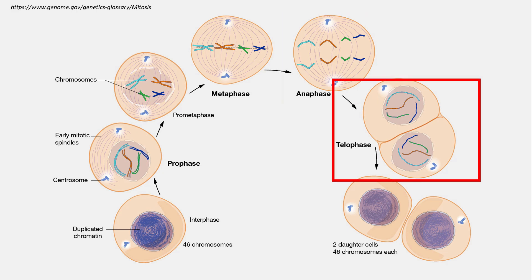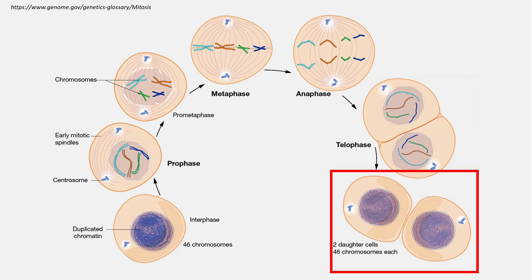Telophase, or the two-cell stage: the sister chromatids are now separate chromosomes, and a new nuclear envelope forms around each set of chromosomes, creating two distinct nuclei. The last stage is called cytokinesis, when the cytoplasm divides, resulting in two identical daughter cells — referred to as diploid — with each cell containing 46 chromosomes.